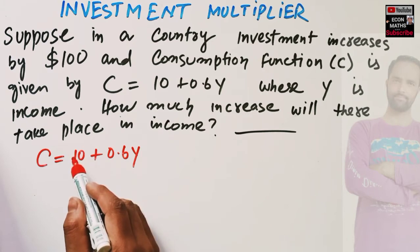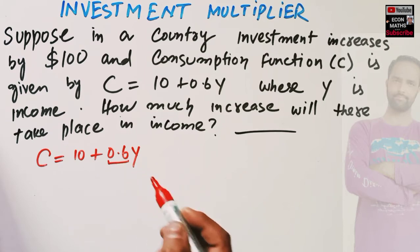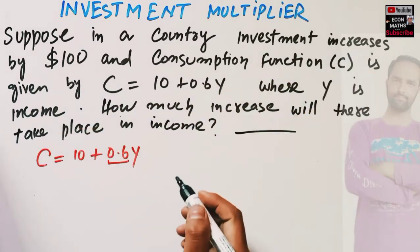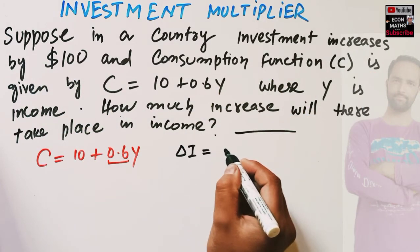C denotes consumption. This 10 denotes the autonomous consumption when income equals 0. This 0.6 shows us the marginal propensity to consume. And we are being told that investment increases by $100, that means change in investment is equal to $100.